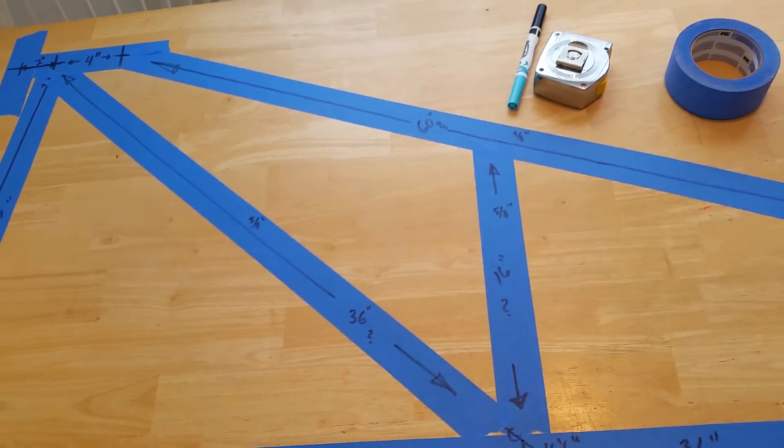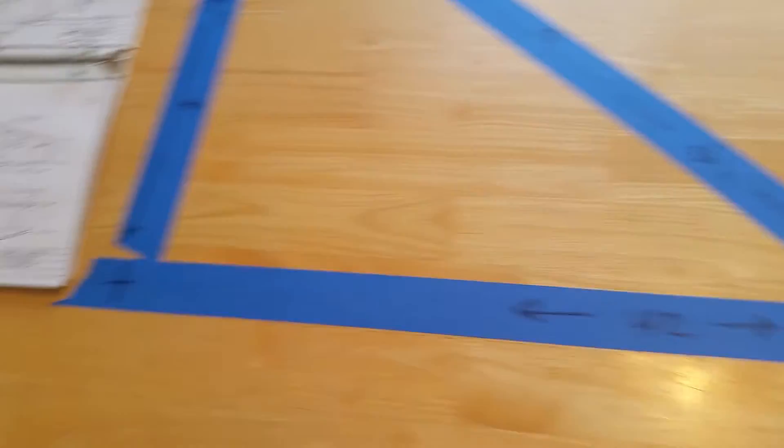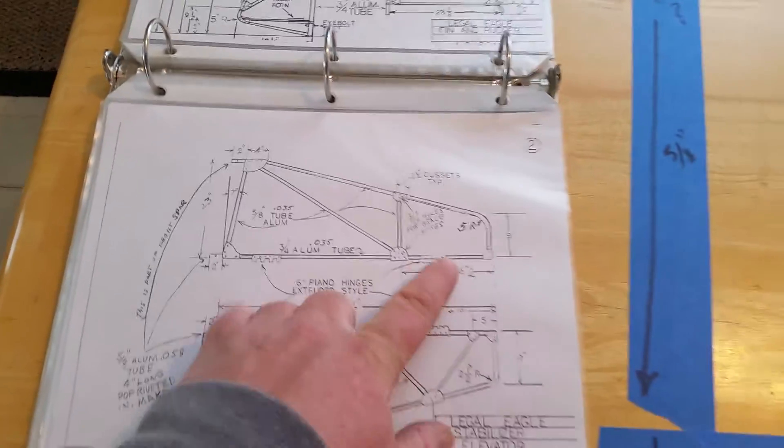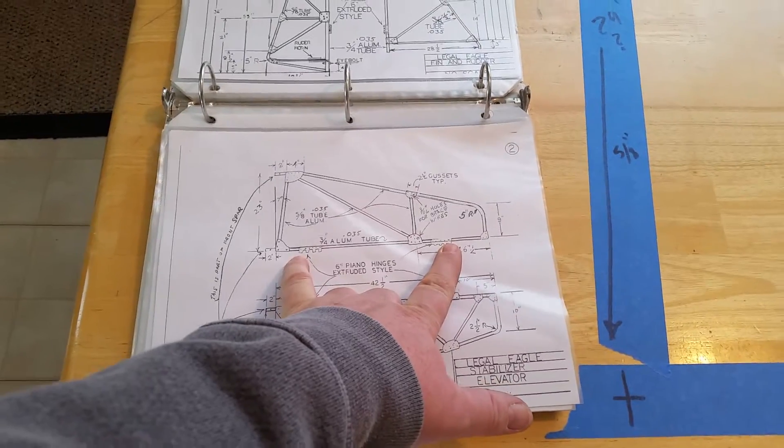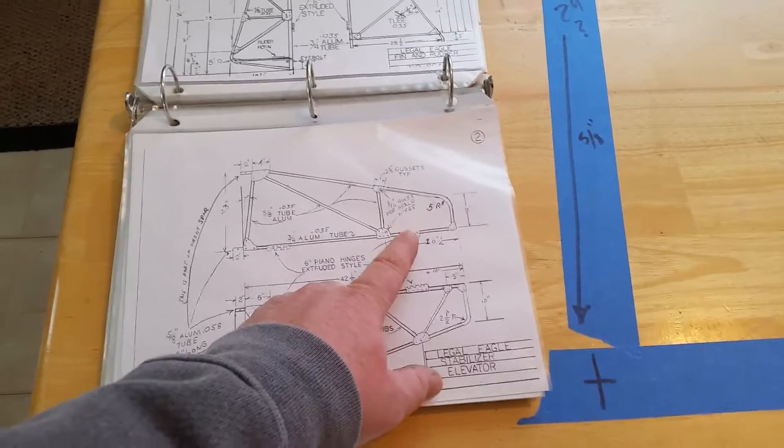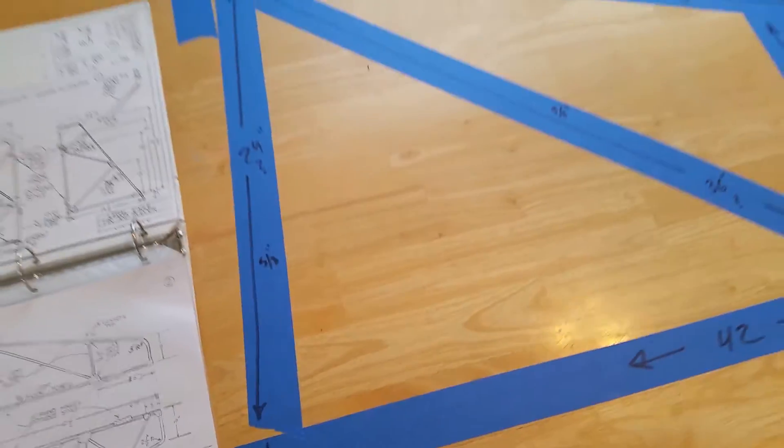That's the next step. I'm gonna get a material list. You can see there's gussets that go in here if you look at the plans. There's some hinges. I'm probably gonna do something a little different. Maybe I won't, but I'm pretty sure I'm gonna do something different there.